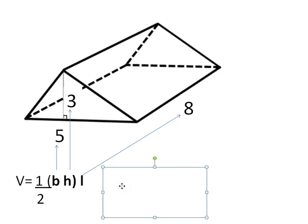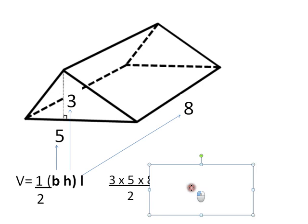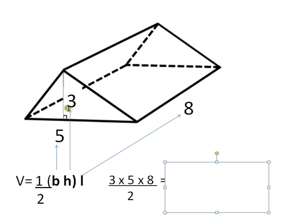So in this case, I have three times five - the height of the triangle times the base of the triangle - times eight, the length.